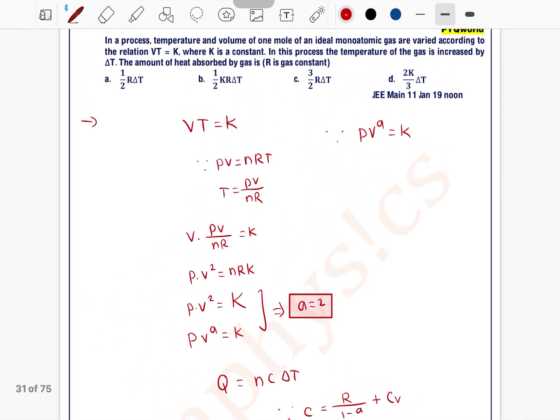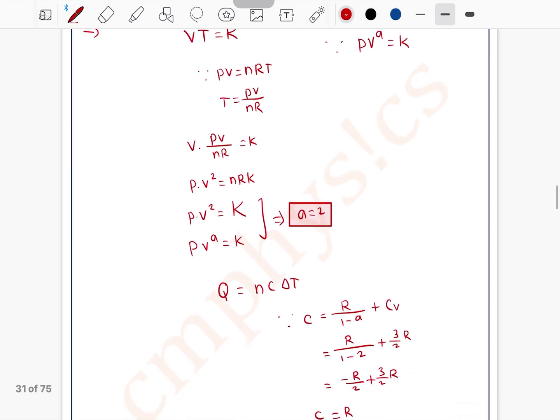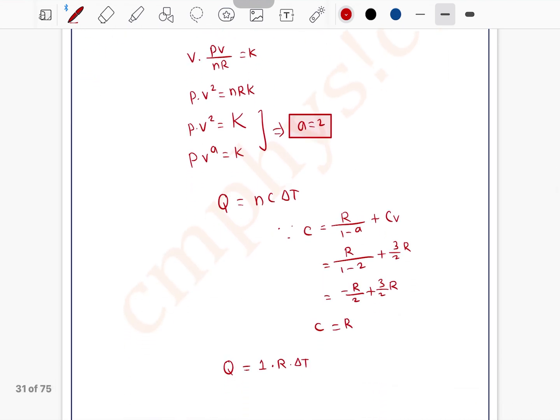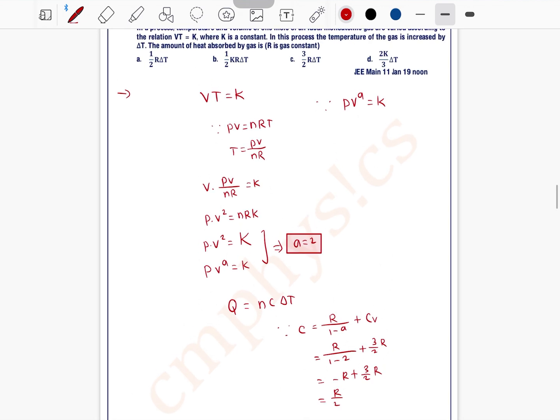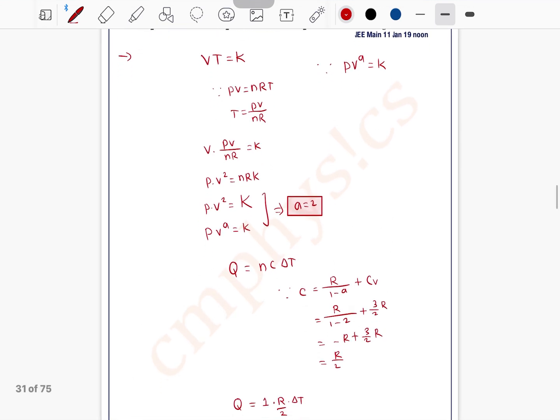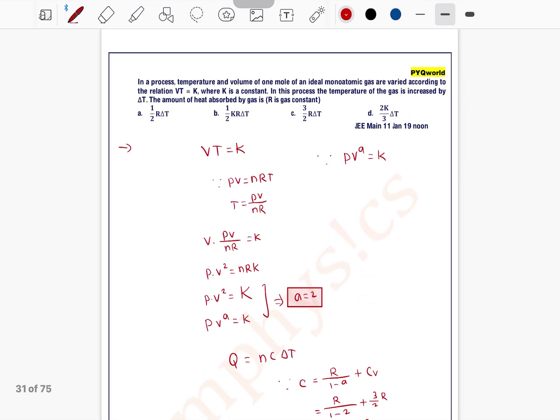A equals 2, so 1 minus 2 is minus. Okay, here we did some mistake. Finding value of C, this equals minus R plus 3 by 2R. So this can be written as R by 2. So Q equals 1 by 2 R delta T, means option A is the correct one. Right.